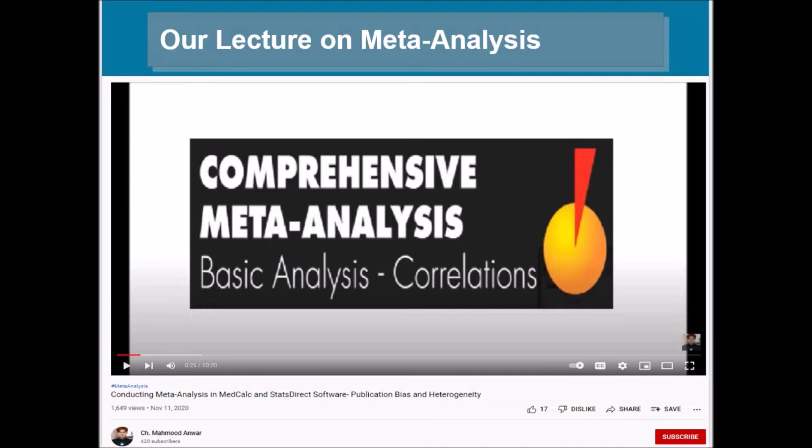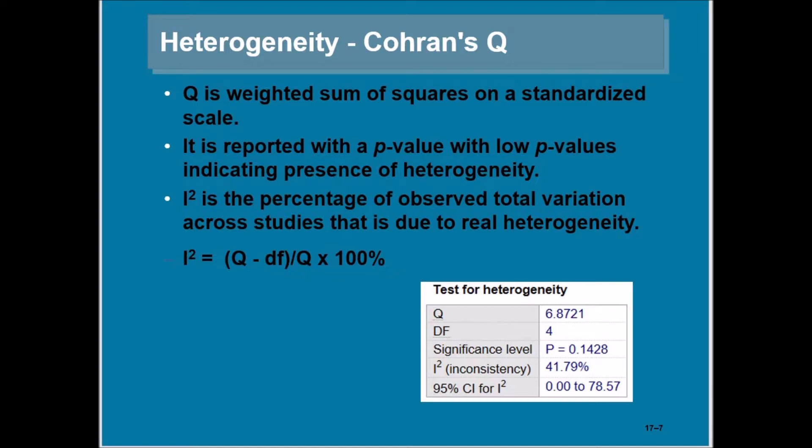Recall from my previous lecture on meta-analysis the concept of heterogeneity that is reflected by Cochran's Q. Q is the weighted sum of squares on the standardized scale, reported with a p-value—low p-values indicating presence of heterogeneity in the sample. I-square is the percentage of observed total variation across studies that is due to real heterogeneity. Here is the formula to calculate I-square: I-square equals Q minus degrees of freedom over Q times 100%.